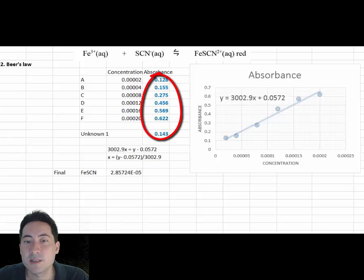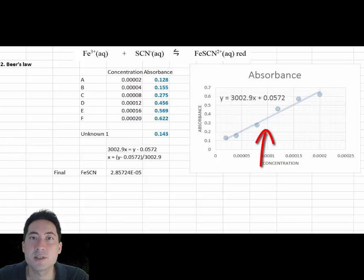The graph of the A to F standards of concentration versus absorbance gives us a standard curve. We then substitute the unknown value into the equation of the line to determine the concentration of iron thiocyanate in the unknown. This is the application of Beer's law.